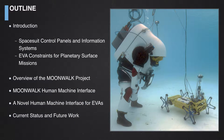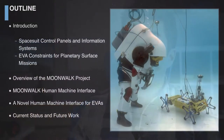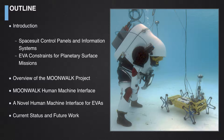First I will give a brief introduction about the current state-of-the-art of spacesuit control panels and information systems. Then we will look into the constraints for extravehicular activity, or EVA, for planetary surface missions. Afterwards I will give an overview of the MoonWalk project and its objectives, followed by a brief introduction to the MoonWalk human-machine interface and what it wants to accomplish. Later I will show the current status of the project.